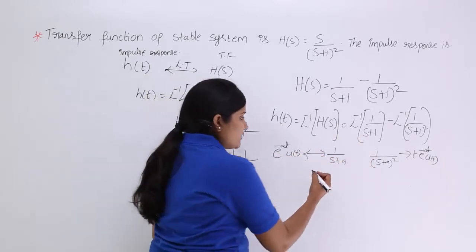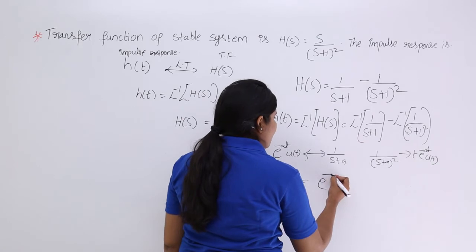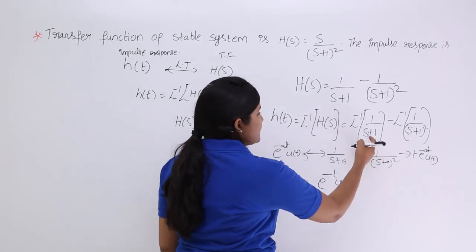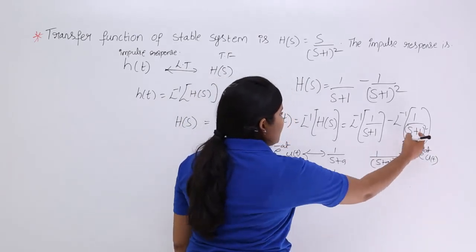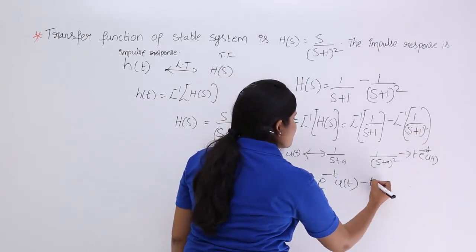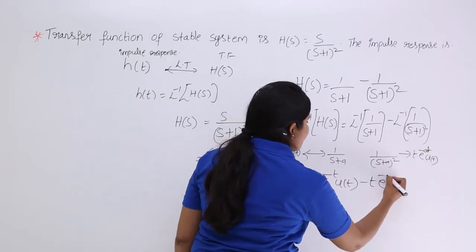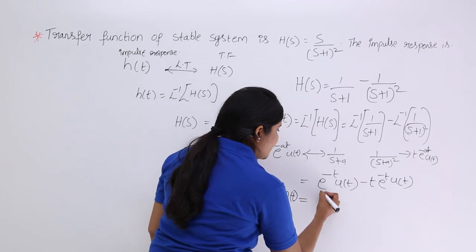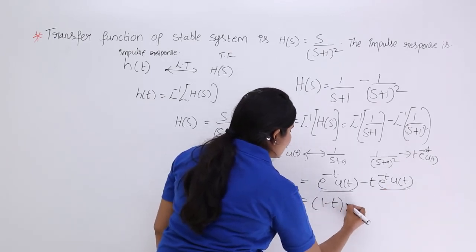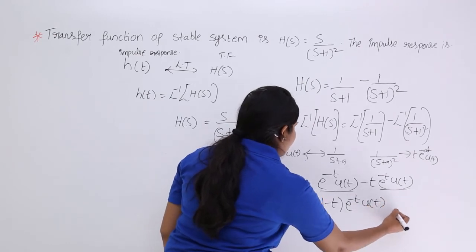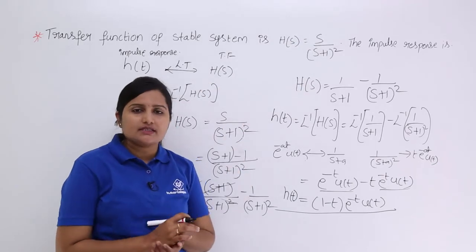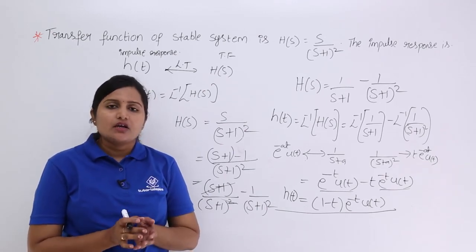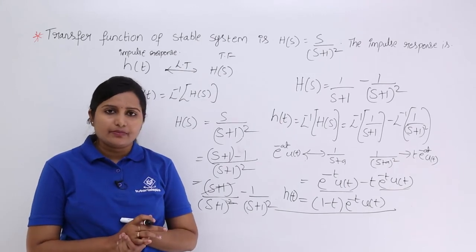Taking common factor e^(-t)·u(t), the impulse response h(t) = e^(-t)·u(t) - t·e^(-t)·u(t) = (1 - t)·e^(-t)·u(t). This is the impulse response of the system when the transfer function is H(s) = s/(s+1)². By doing a simple modification of the numerator, we are able to get simple solutions for inverse Laplace transforms.